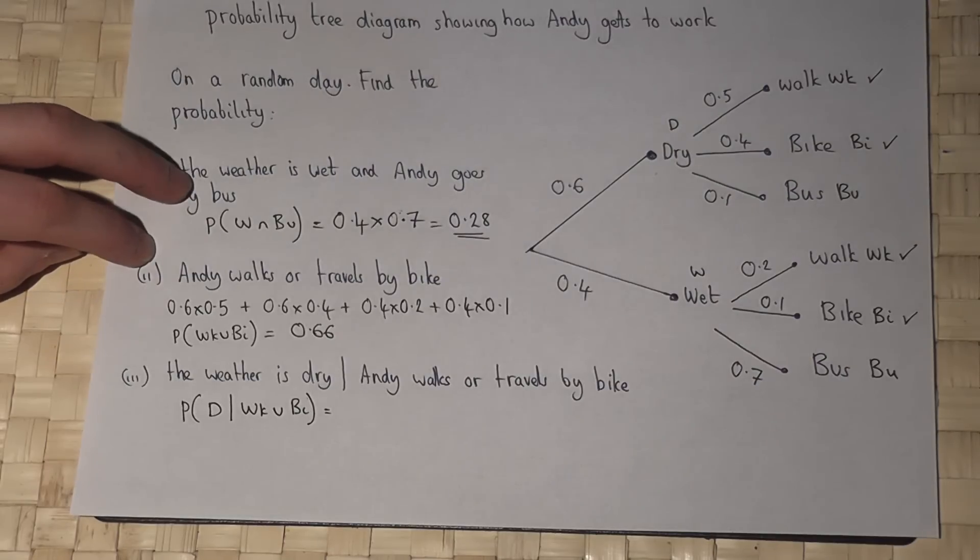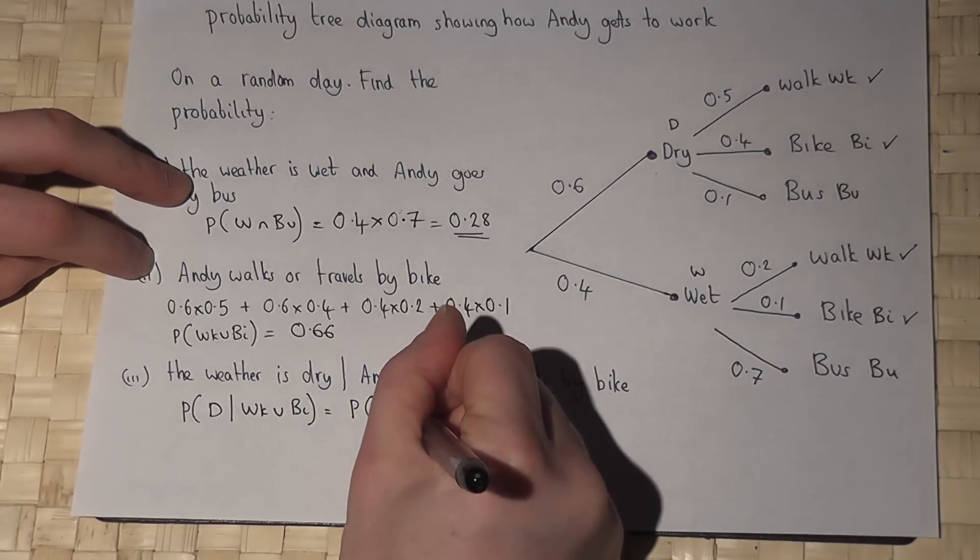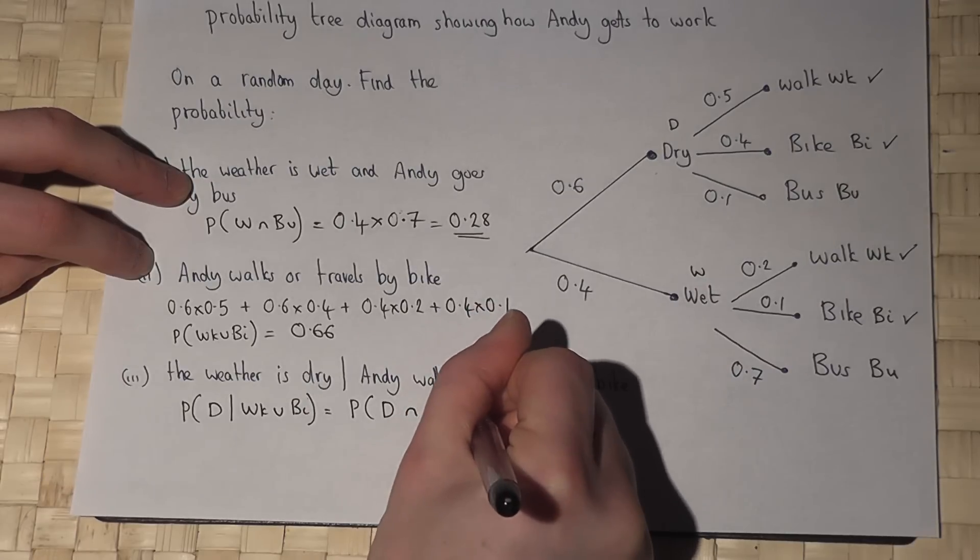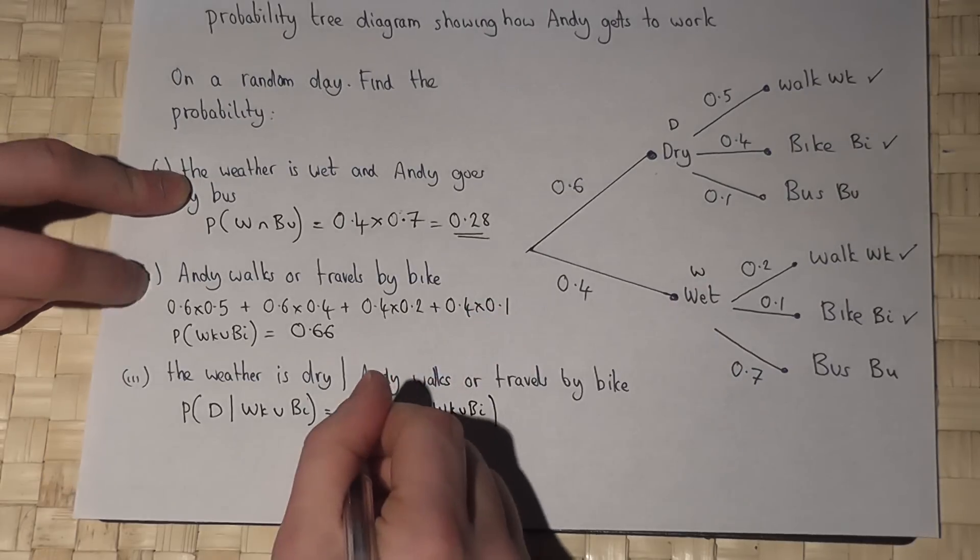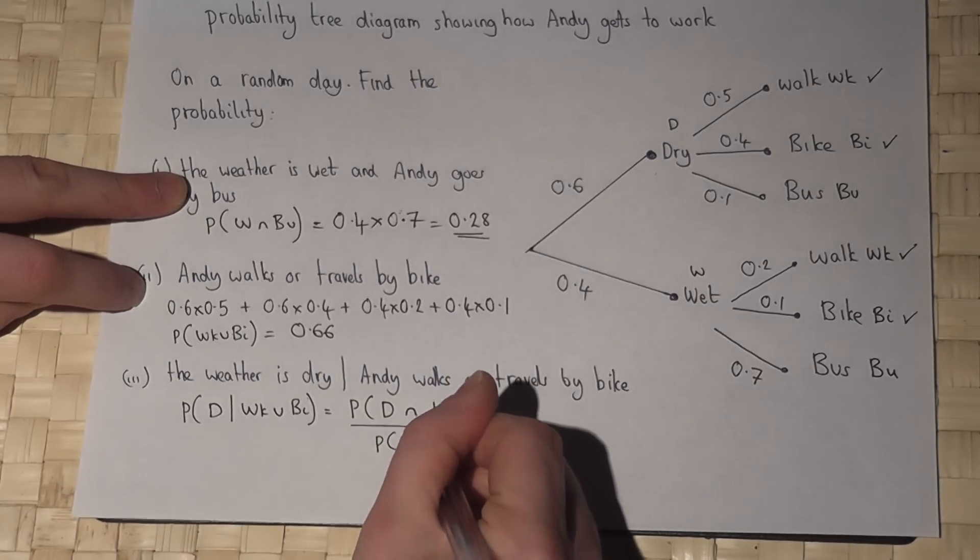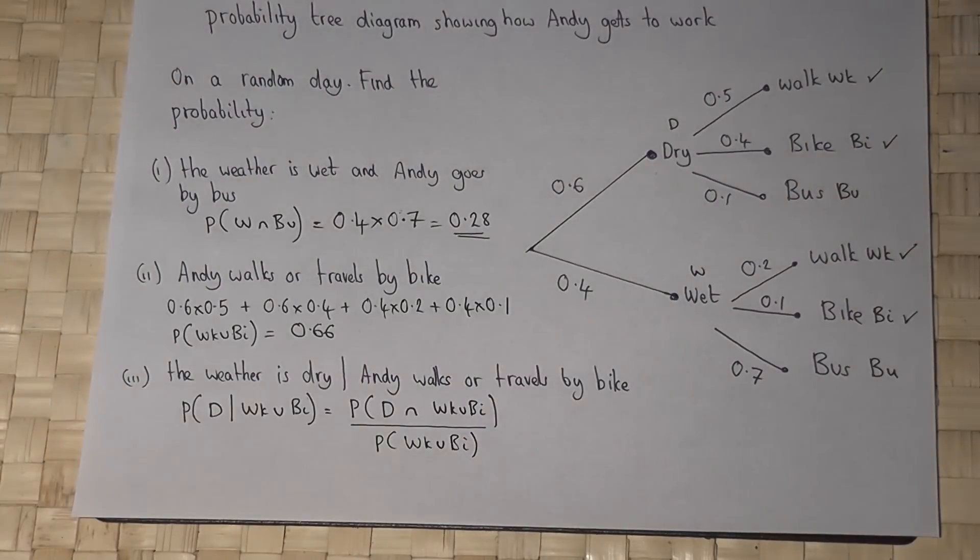Now the formula for this is the chance it is dry and he walks or takes a bike all over the chance that he walks or takes a bike. Now this is not as confusing as it might appear.